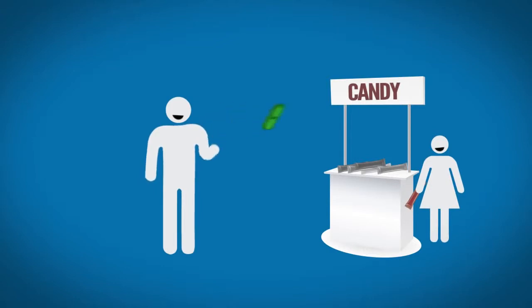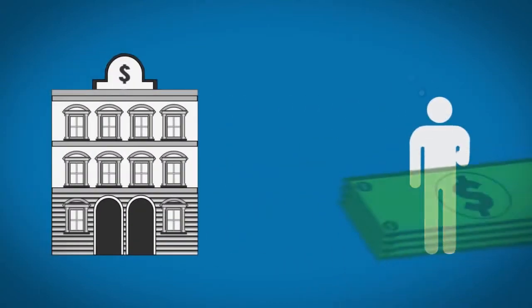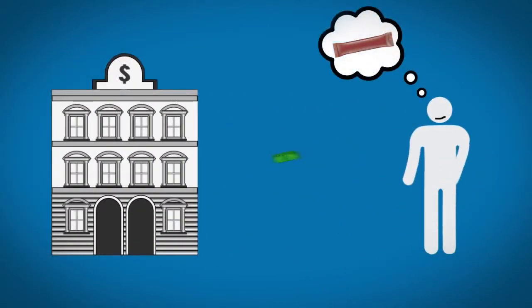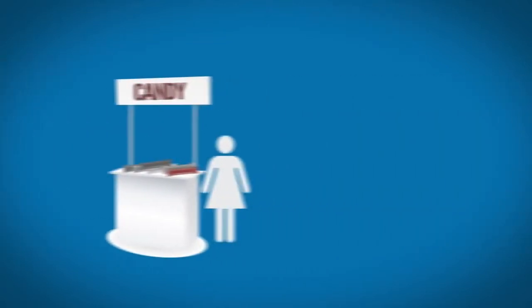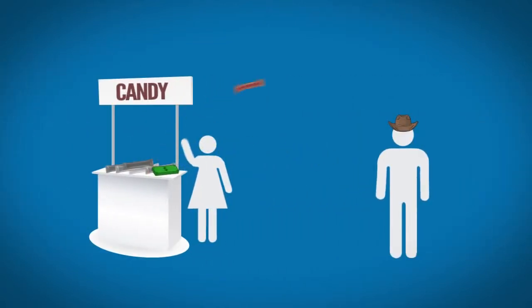When you have a dollar, you have the ability to purchase a candy bar. When you don't, you don't. Here's what that means. When somebody saves money at a bank, they're choosing to forgo their consumption and allow somebody else to consume in their place.